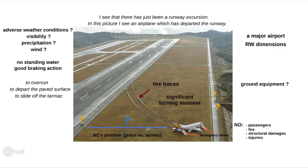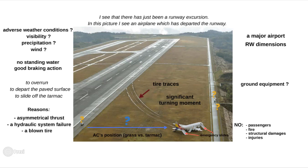Since we excluded the crosswind impact as one of the possible reasons, that leaves us with either asymmetrical thrust due to, for example, thrust reverser malfunction, or a hydraulic system failure, which could have caused problems with nose wheel steering, rudder, or brakes on the left main landing gear — or that was simply a blown tire. Your analysis doesn't have to be too sophisticated; your goal is rather to demonstrate decent English, relevant vocabulary, and good reasoning.